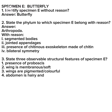Question three: state three observable structural features of Specimen E. Answer: number one, presence of proboscis; number two, wings are membranous, that is soft; number three, wings are pigmented, meaning they are equally colored; number four, abdomen is hairy. Candidates, take note.